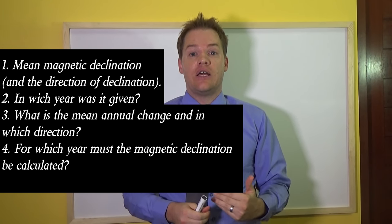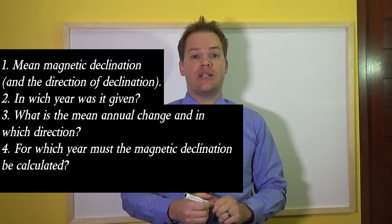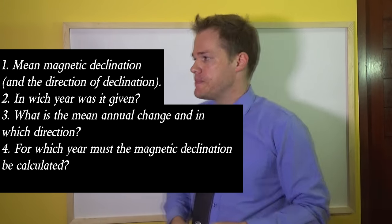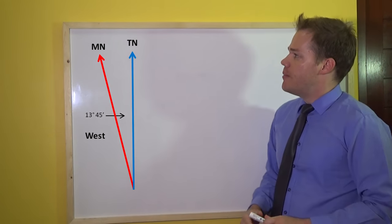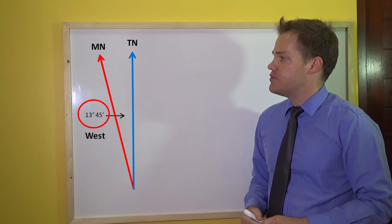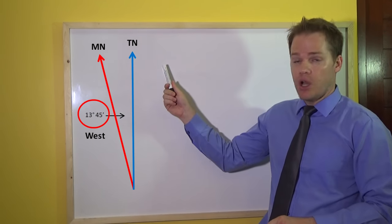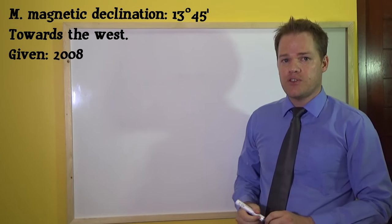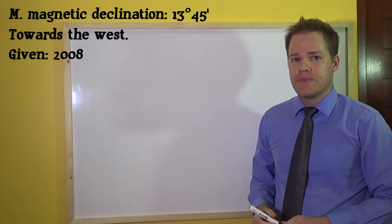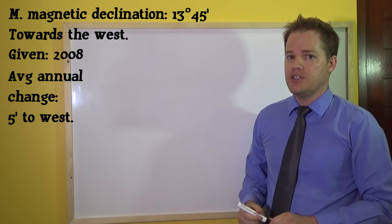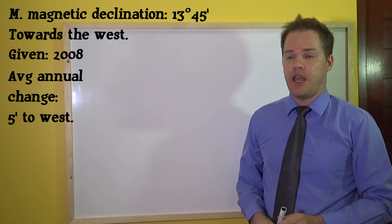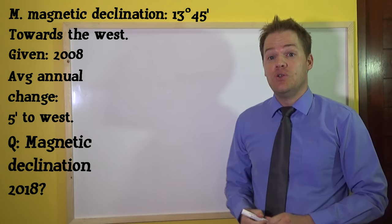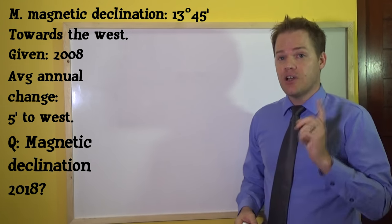Now that we know what to identify, let's look at an example. The mean magnetic declination is 13 degrees 45 minutes. It's very important to know that the declination is towards the west. It was given in the year 2008 in the month of June, and the average annual change is five minutes to the west. Your teacher wants you to calculate the magnetic declination for the year 2018.